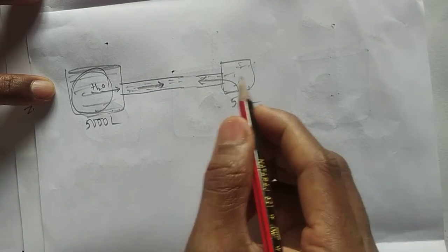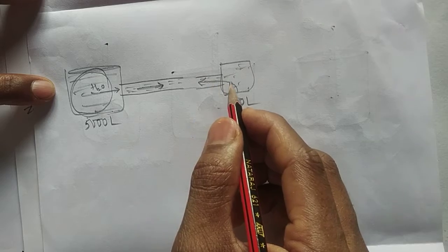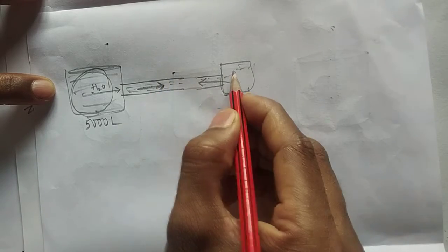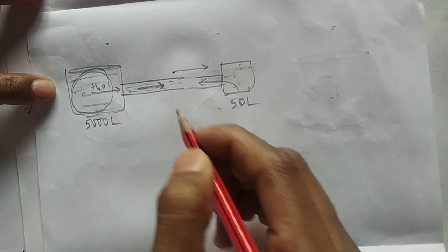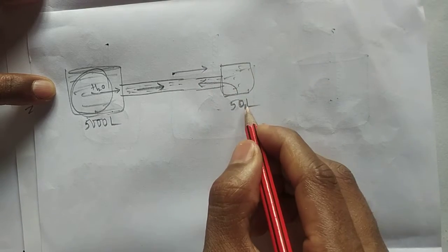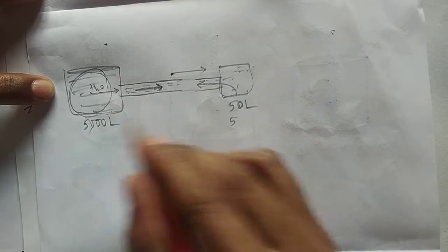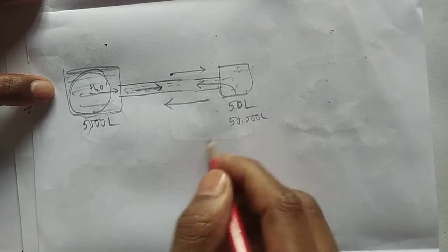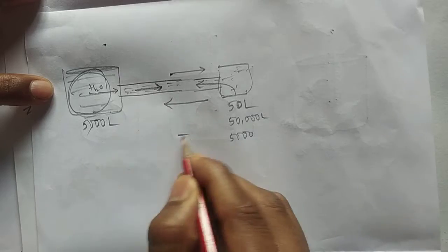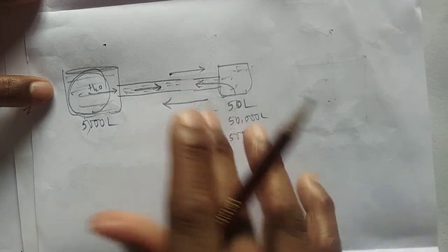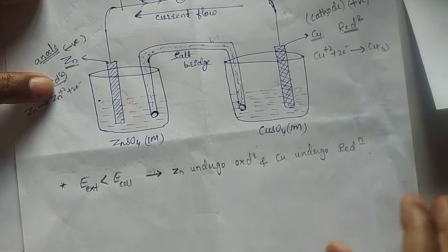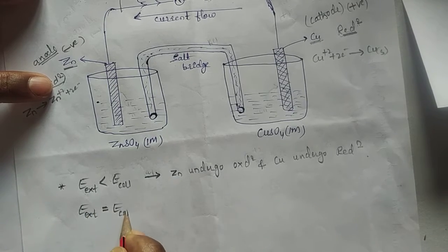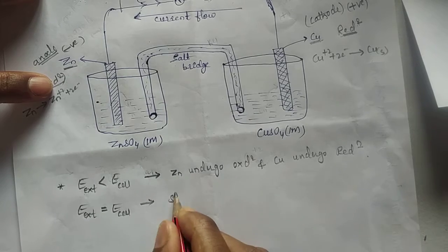If the second beaker has only 550 liters of water, then water flows from higher potential to lower potential — it continues as it is. But if the second beaker has 50,000 liters, the flow of water reverses. And if both beakers have the same amount, say 5000 liters, the flow stops — no change. The same concept applies here: if the external potential equals the cell potential, the cell stops working.